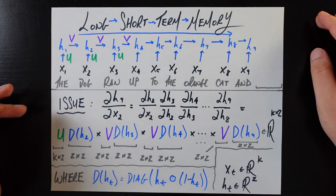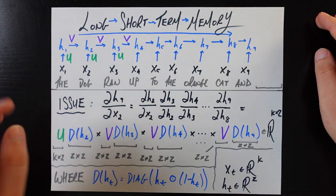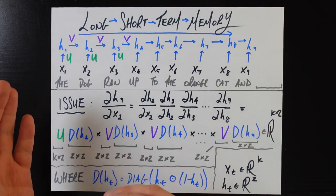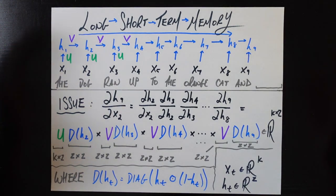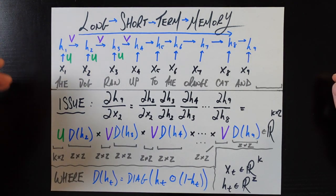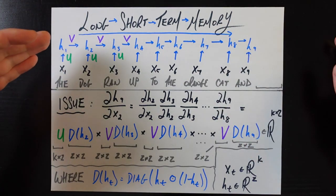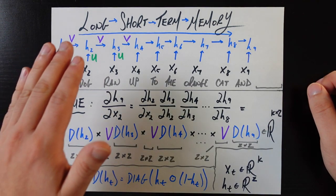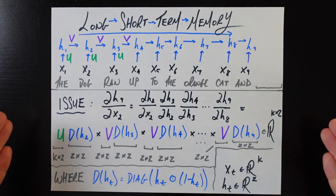Let's recap the structure of the simple recurrent neural network. I've simplified it even further than in the original video. When we implemented recurrent neural networks in Python using the Keras package, we found this is the structure they use. The difference you probably noticed is that there's not a hidden state and a separate output state y — there are no y's anymore. We're just using the hidden state h as the output state itself, and that's exactly the choice that the LSTM makes as well, so it'll make our transition from simple RNNs to LSTMs easier.